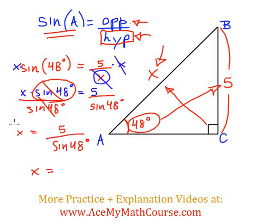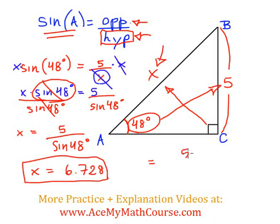Then we can calculate that with our calculator. So 5 divided by sine of 48 degrees, I plug it in all at once to get 6.728, and that is the answer.